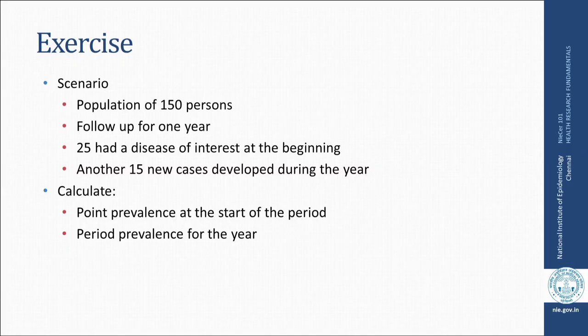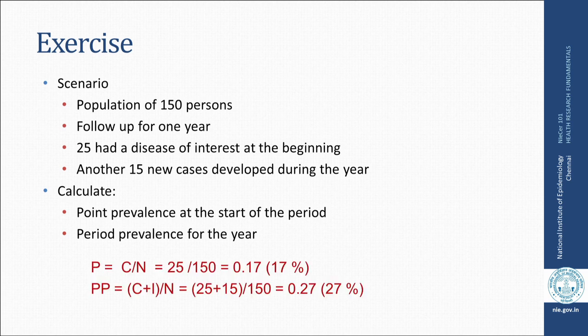For example, take a population of 150 and follow up for one year. At the beginning, 25 had the disease of interest, and another 50 new cases developed during the year. The point prevalence at the start is C/N = 25/150 = 0.17, or 17 percent. The period prevalence is (25 + 50)/150 = 75/150 = 0.50, or 27 percent... actually 25+50=75 giving 50%, but per the lecture: 25+15=40/150=0.27 or 27 percent.